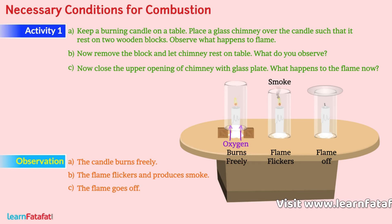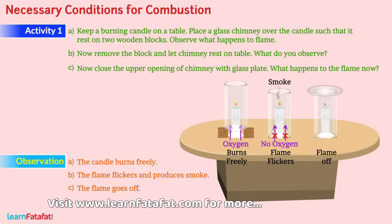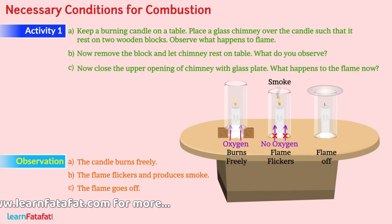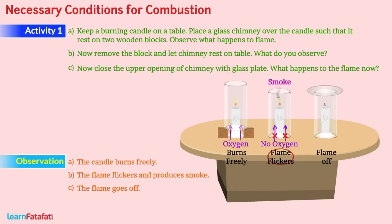However, once the supply from the bottom of the chimney is closed, then due to incomplete supply of oxygen, the flame flickers and produces smoke. This is case B. In the third case, there is complete isolation of the candle from oxygen. As a result, the flame goes off.